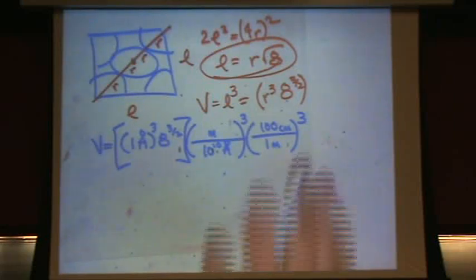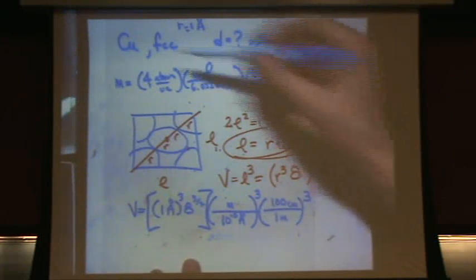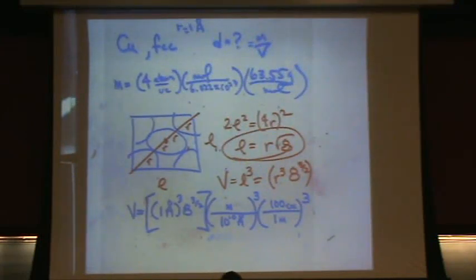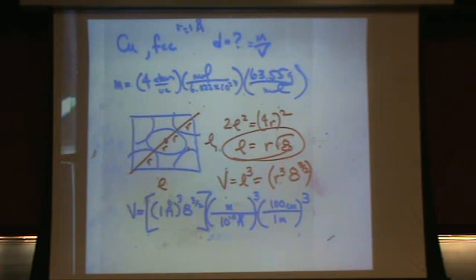Whatever that volume is, put it on the bottom. You've got your volume on the bottom and your mass on top, and you can find the density of copper for FCC packing. By the way, 1 angstrom is 10⁻¹⁰ meters, or equivalently 1 meter is 10¹⁰ angstroms — either way is totally fine.